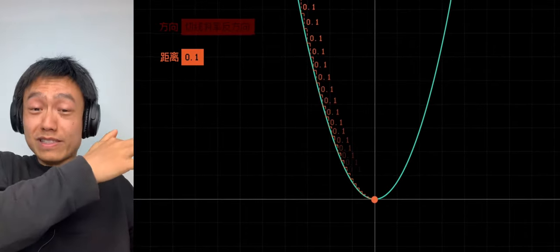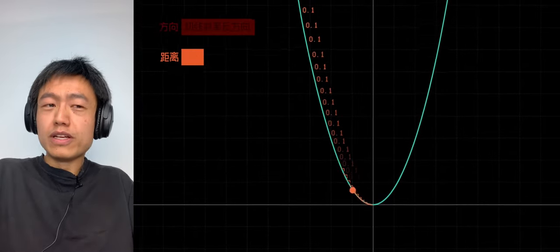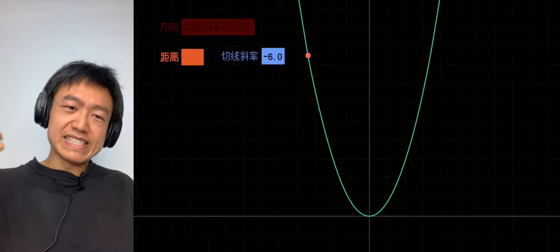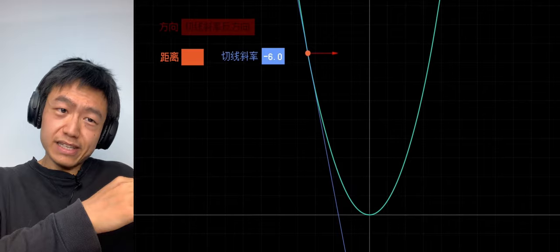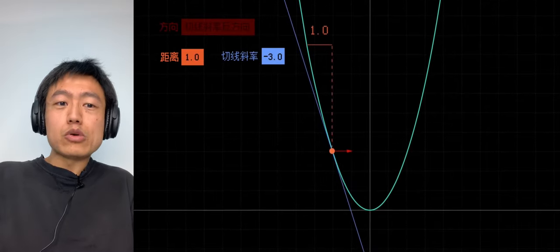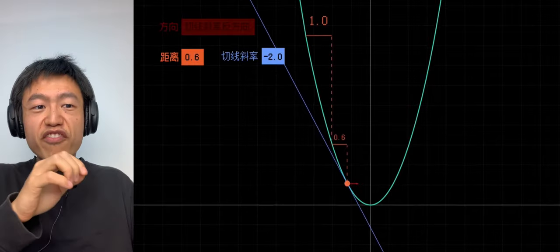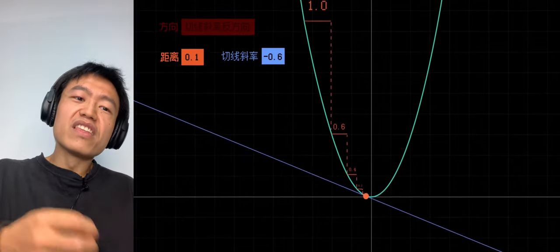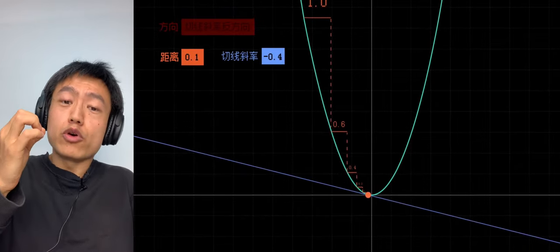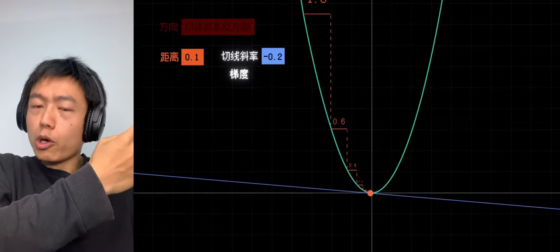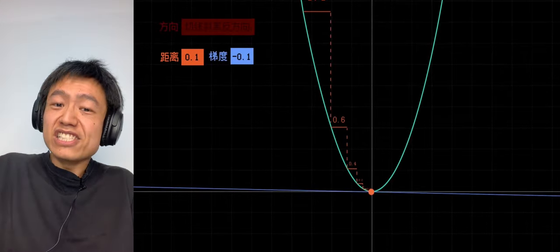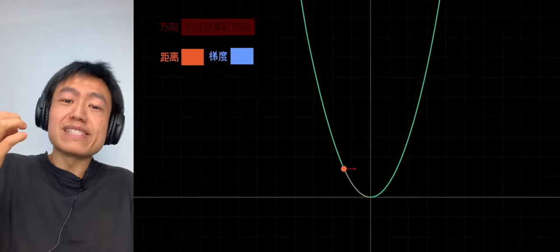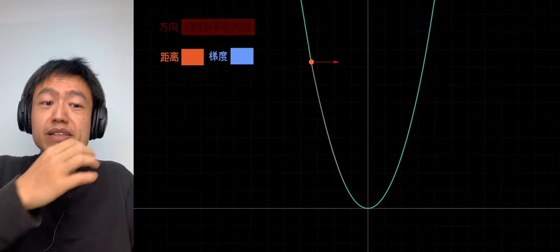Although it can reach the lowest point, its progress is too slow. A fast way is to make the distance of movement proportional to the slope. For example, in steep places, you can safely stride, while in gradual and gentle places, to prevent you from missing the lowest point, you need to move slowly with small steps. This is the core concept of gradient descent. In this function with only one variable, the gradient is the tangent slope.